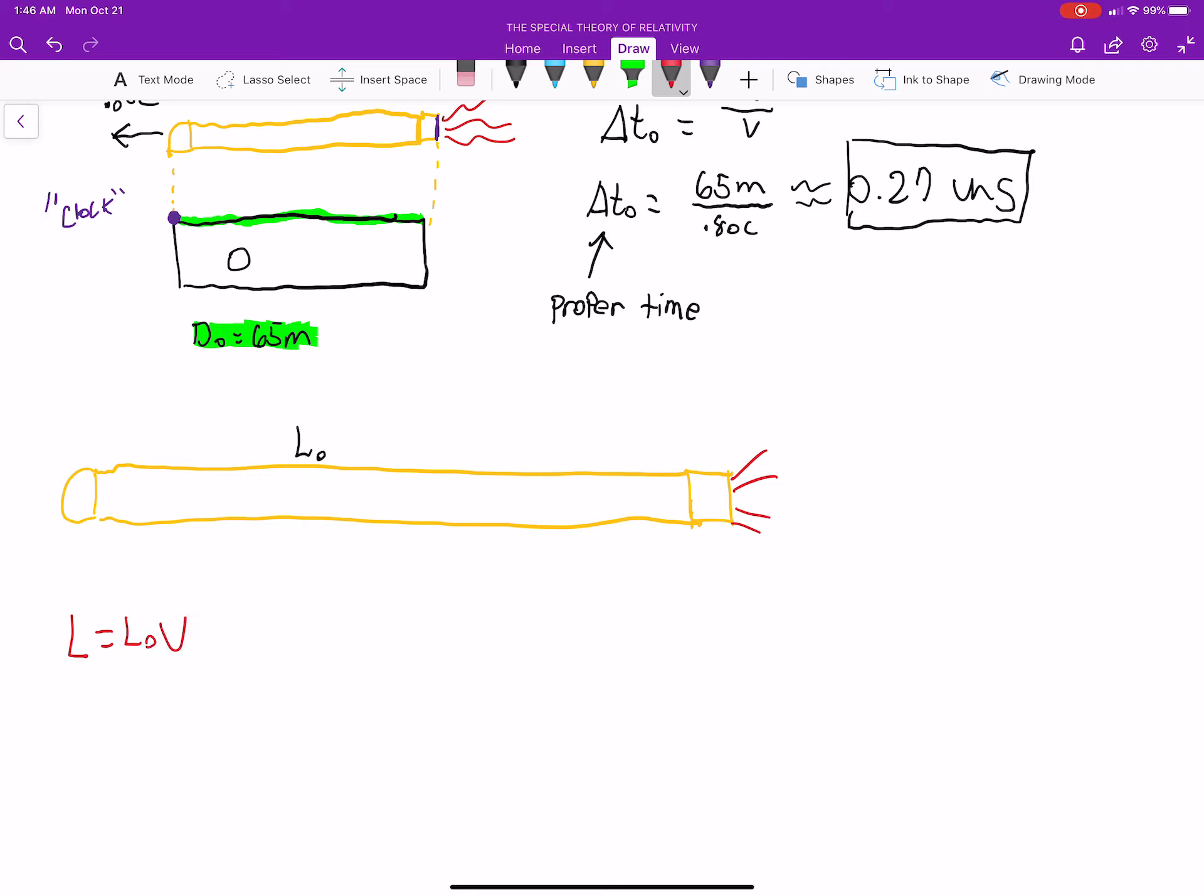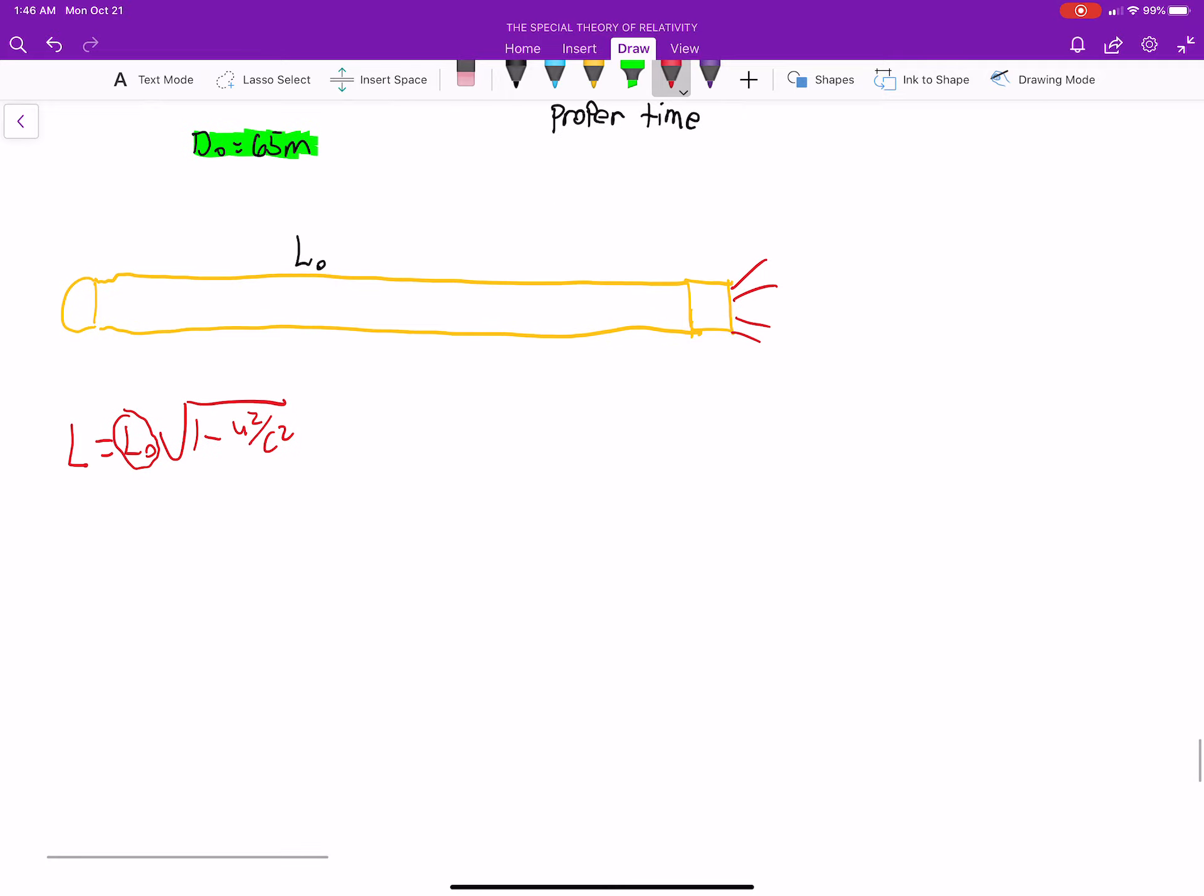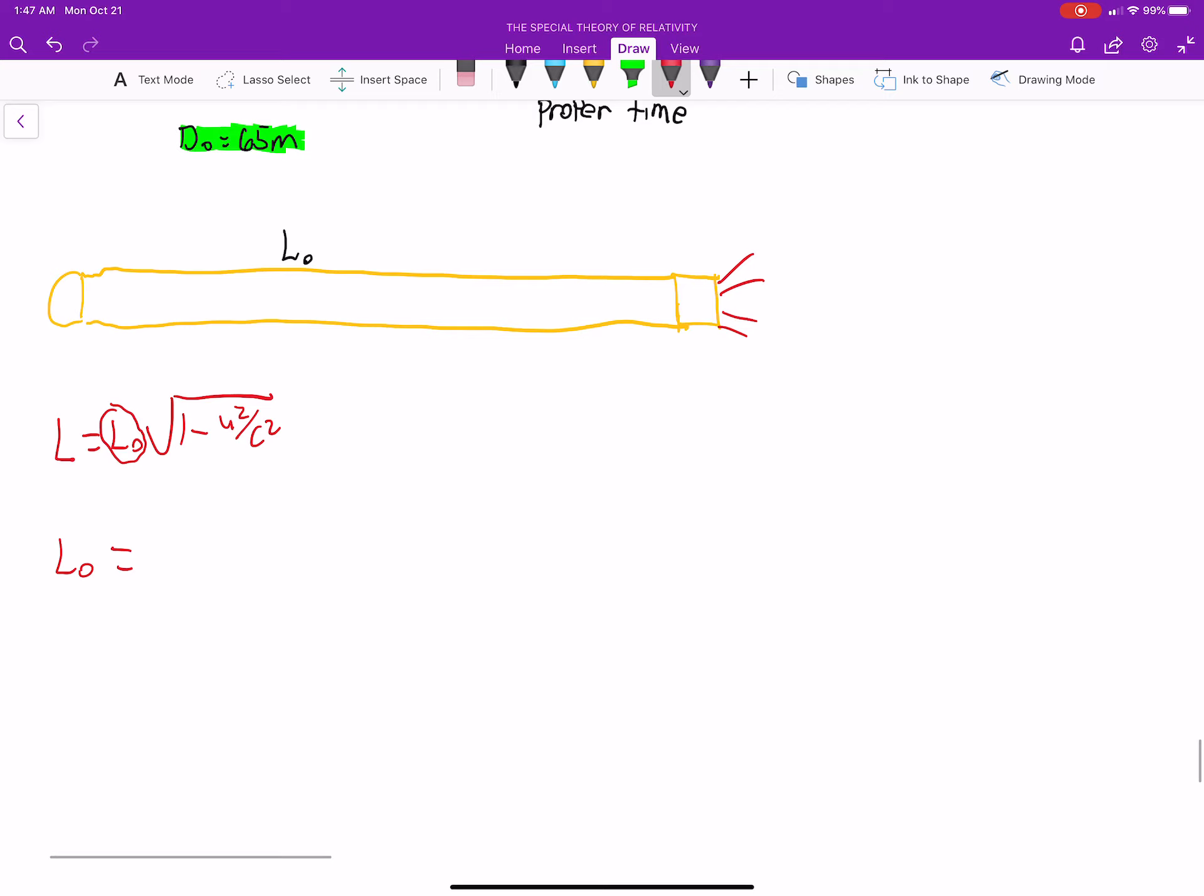Now, we can find the rest length using our equation because we know, if we remember from the previous videos, L equals L-naught times the square root of 1 minus u squared over c squared. So the rest length is this guy. So all we have to do is isolate that. So L-naught equals L all divided by the square root of 1 minus u squared over c squared. And we have all these values. And again, L-naught is the proper length. Proper slash rest.